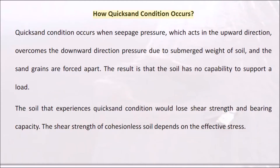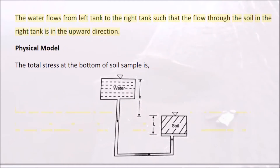Quicksand condition occurs when seepage pressure, acting in the upward direction, overcomes the downward pressure due to the submerged weight of soil, and the sand grains are forced apart. The result is that the soil has no capability to support a load. The soil that experiences quicksand condition loses shear strength and bearing capacity. The shear strength of cohesionless soil depends on effective stress.